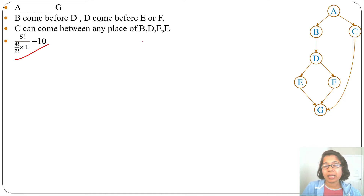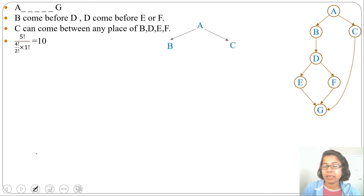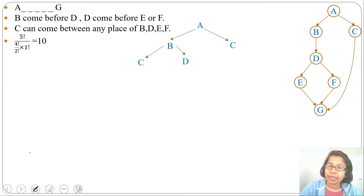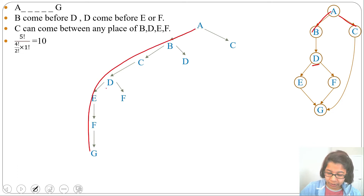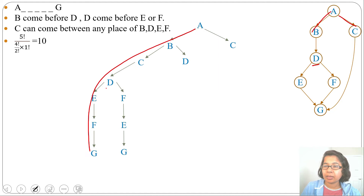Another way is to draw a topological ordering tree. From A we can visit B or C first. Suppose after A we visit B; then after B we can visit either D or C. If after B we visit C, then after C we must visit D next (since E and F depend on D), and then after D we can visit either E or F. Visiting E then F then G gives one ordering; visiting F then E then G gives another ordering.